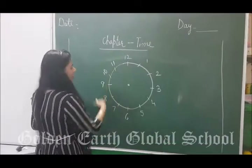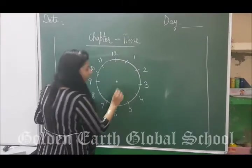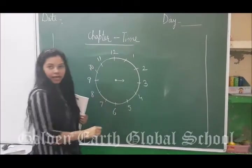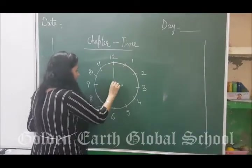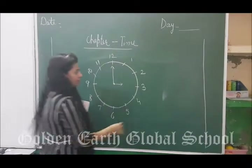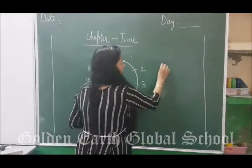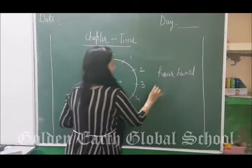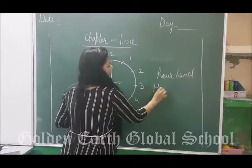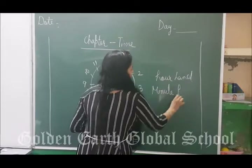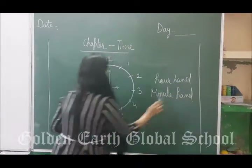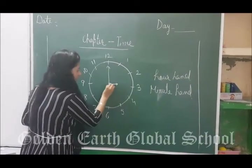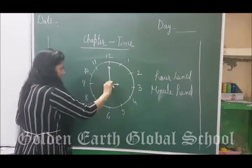This is the clock. In this clock you have two hands. One small hand is the hour hand and the big one is the minute hand. The small hand is the hour hand and the big one is the minute hand.